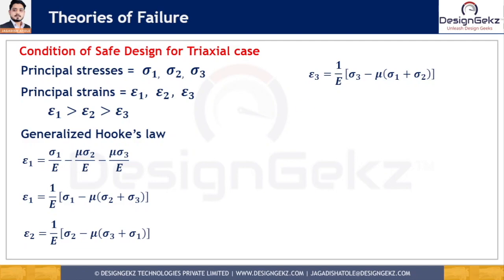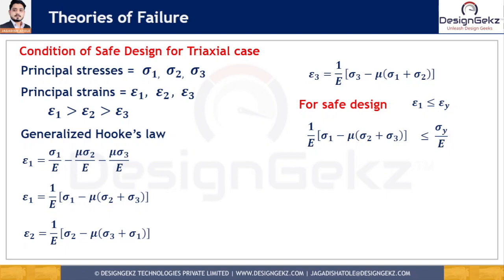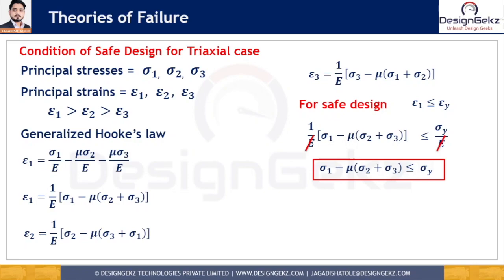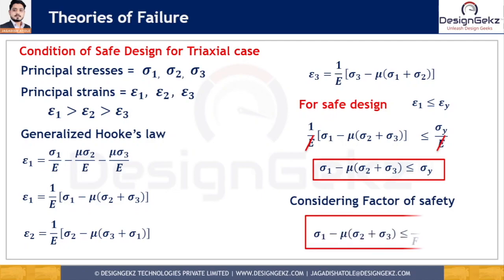For safe design, epsilon 1 should be less than or equal to epsilon y, the yield strain. This can be written as (1/E) times (sigma 1 minus mu times (sigma 2 plus sigma 3)) less than or equal to sigma y divided by E. Cancelling 1/E from both sides gives: sigma 1 minus mu times (sigma 2 plus sigma 3) less than sigma y. Considering the factor of safety: sigma 1 minus mu times (sigma 2 plus sigma 3) less than sigma y divided by factor of safety. This is the safe design criteria for three-dimensional or triaxial loading conditions.